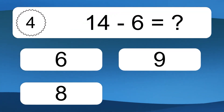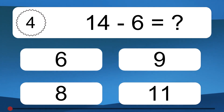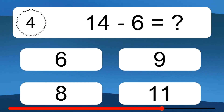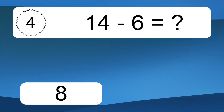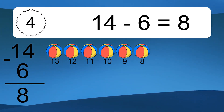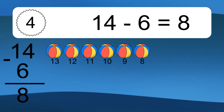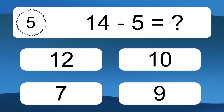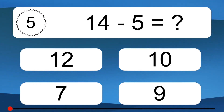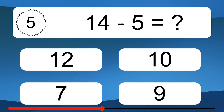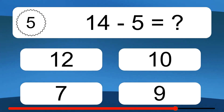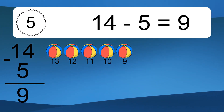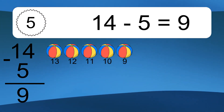14 minus 6 equals what? 14 minus 6 equals 8. Let's count it: 13, 12, 11, 10, 9, 8. 14 minus 5 equals 9. Let's count it: 13, 12, 11, 10, 9.